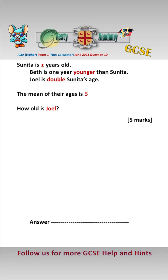So we need to be careful reading the question carefully. Sunita is equal to x years old. Beth is one year younger than Sunita, so Beth's age is x minus one.